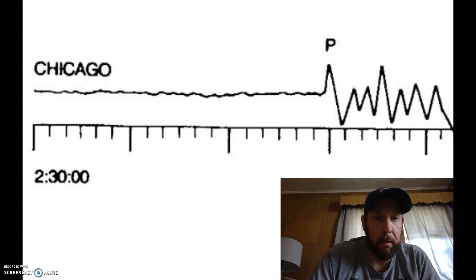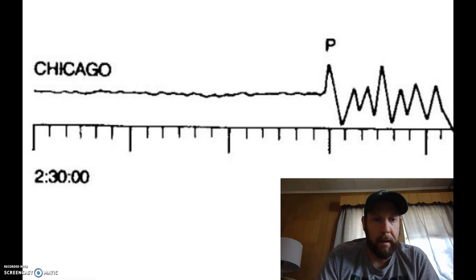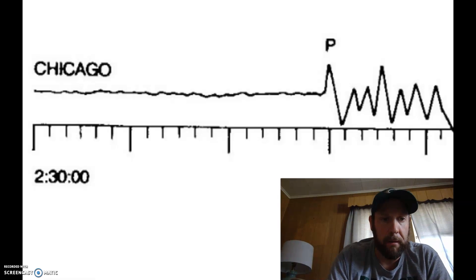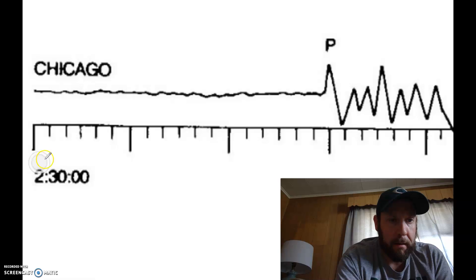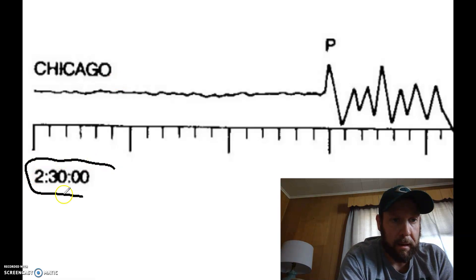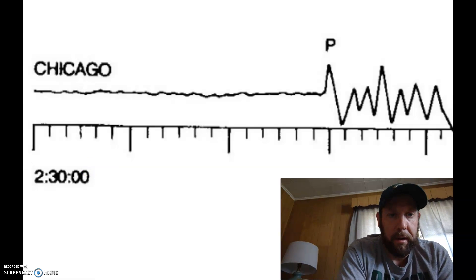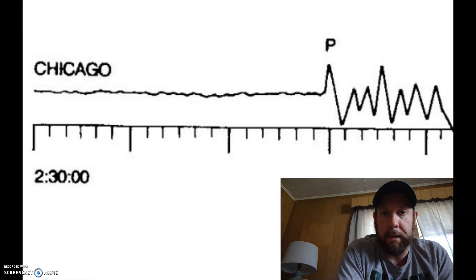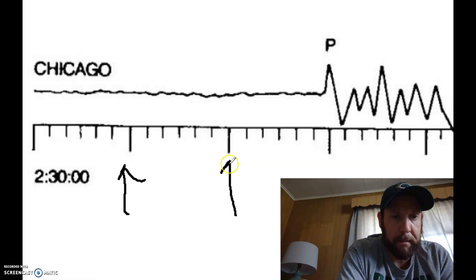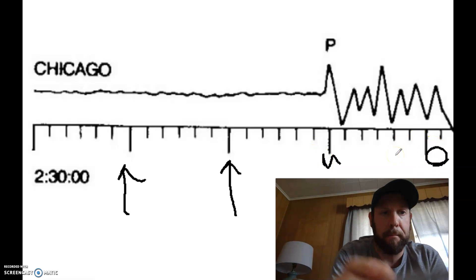We're looking up at the top corner — it's Chicago — and let's try and decipher what all of these lines mean. The first line right here is 2:30, two hours, 30 minutes, and zero seconds. We have to determine what the big lines and the little lines mean. The big lines — right here, right here, there, and this one — each mean one minute.